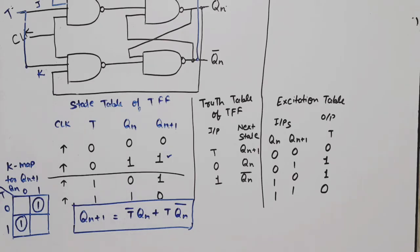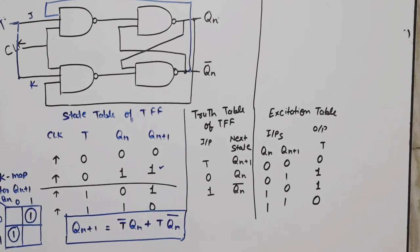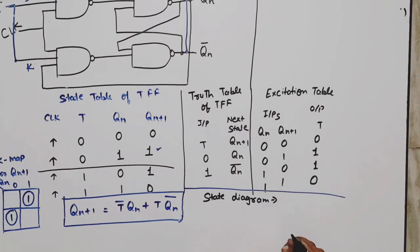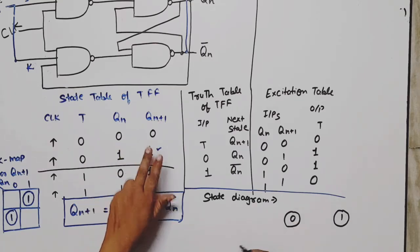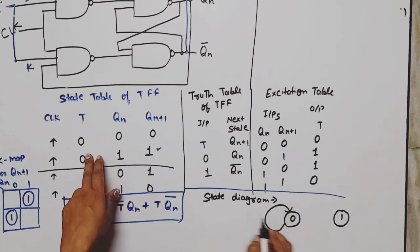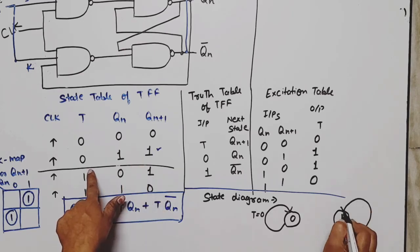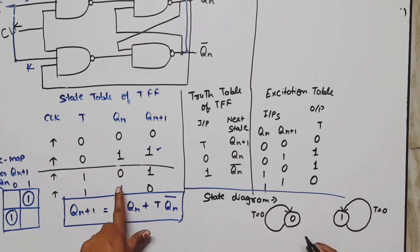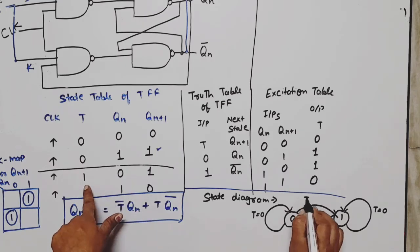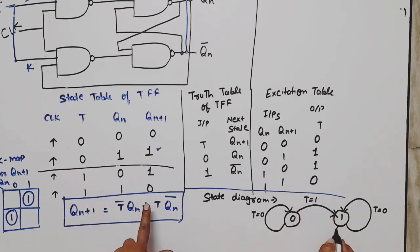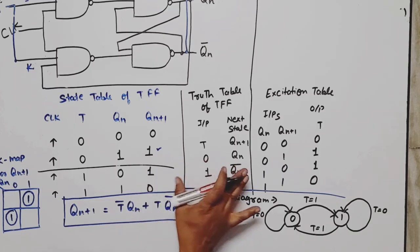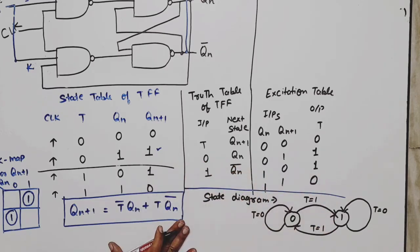Now we will see the state diagram. State diagram also needs the state table. A flip-flop means two states are possible, either zero or one. Start with zero to zero - present state zero, next state zero when T is equal to zero. When one to one, present state is one, next state is one when T is equal to zero. When zero to one and one to zero, both happen when T is equal to one. So this is the state diagram covering state table, characteristic table, truth table, excitation table, characteristic equation, and state diagram.